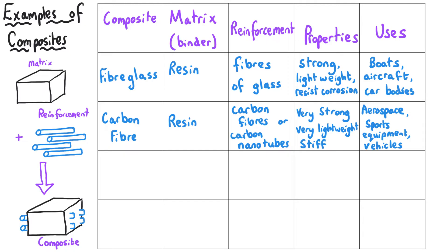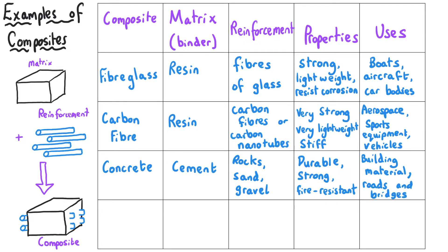Another type of composite that occurs quite regularly in exam situations is concrete. In concrete, the matrix is the cement, which can be used by itself, but when you've got the reinforcement of extra materials such as crushed up stone or gravel or sand, that makes the concrete much more durable and strong, and also it has the added property of being fire resistant. And so concrete is of course a very popular building material, and it's used for roads and bridges as well.